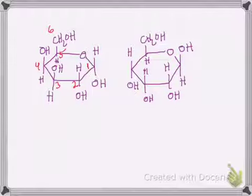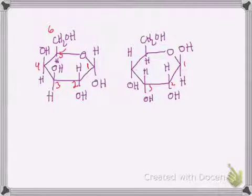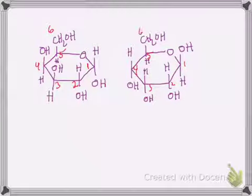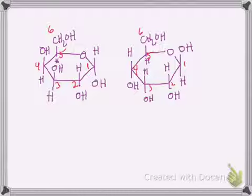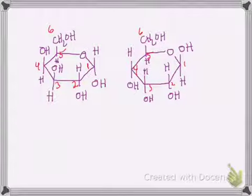On the sugar on the right hand side, that's the anomeric carbon — that's carbon one, two, three, four, five, and six. So what we're going to do is connect the number one carbon on the left hand sugar to the number four carbon on the right hand sugar through the hydroxyl groups.